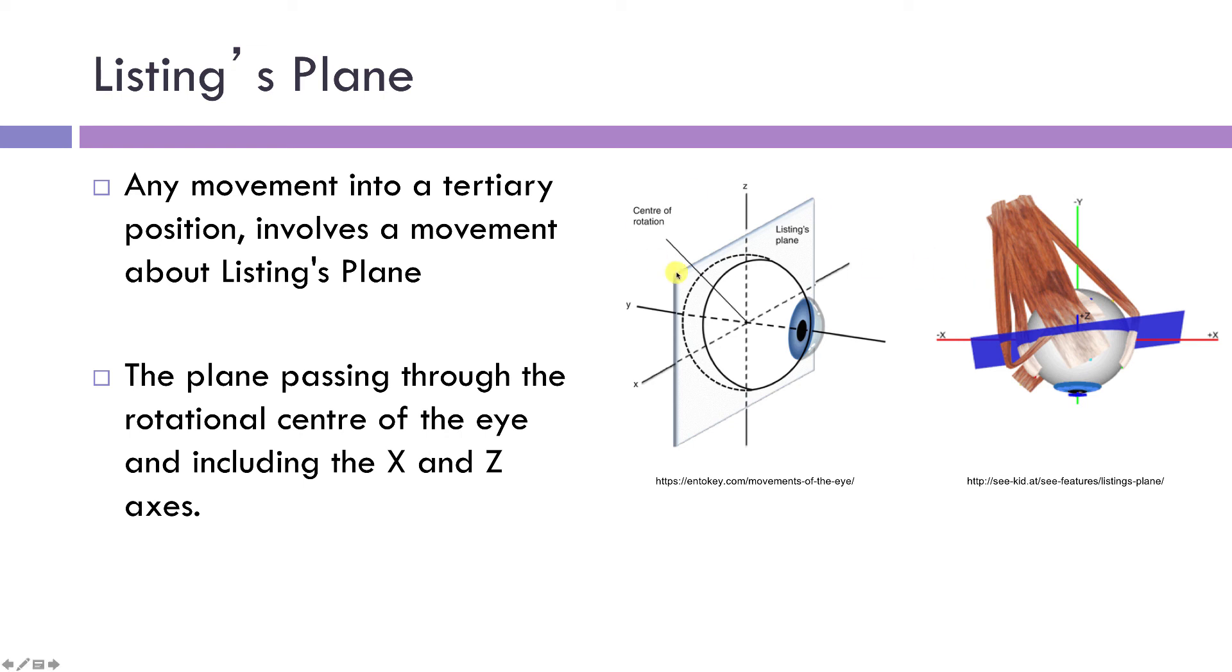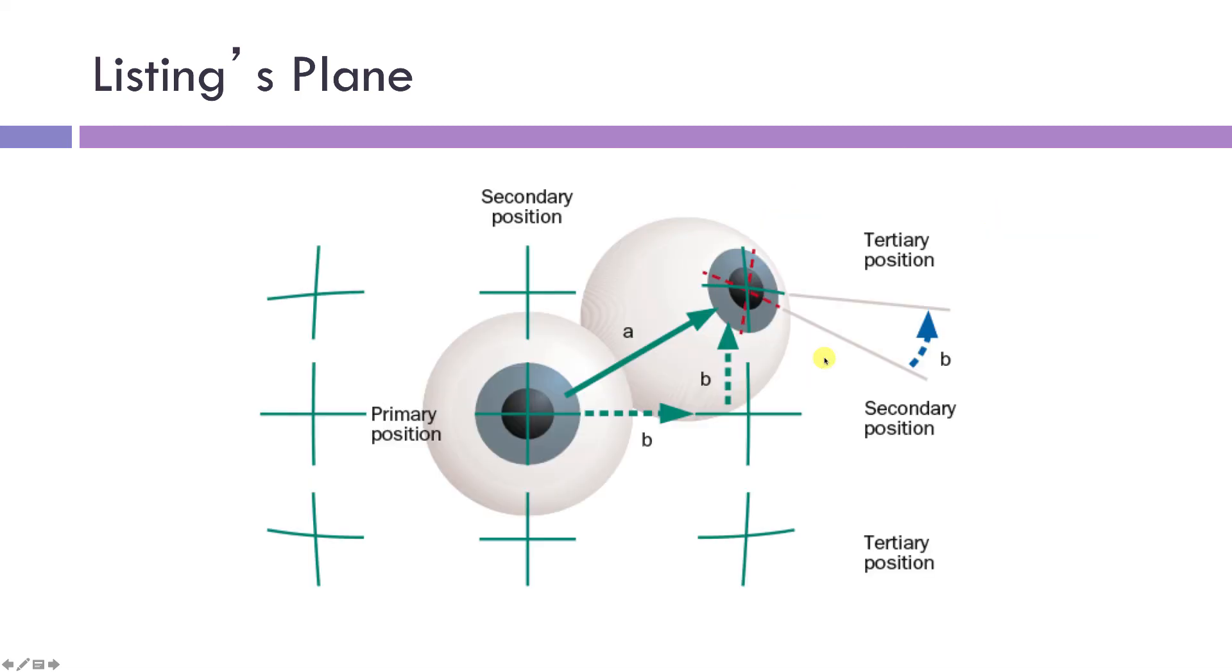If you want to move into a corner such as this, it needs to do so within this plane. So if we look at an image here, we have the eye looking straight ahead. The eye wants to move left and up. In order to do this eye movement, the eye movement must occur around or within Listing's plane.